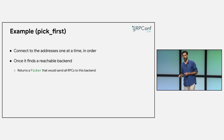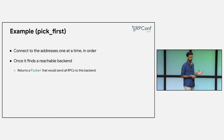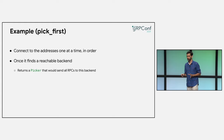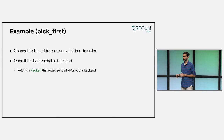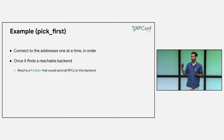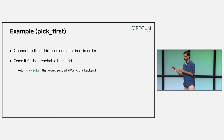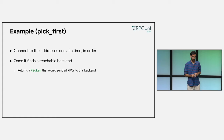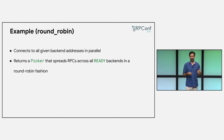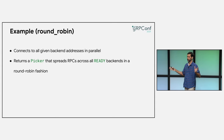Pick first is one of the simplest LB policies that all implementations of gRPC ship with. It gets a bunch of addresses from the name resolver, starts connecting to them in order, and the moment it finds one that is reachable, it uses that for all RPCs. Round robin is in stark contrast: when it receives addresses from the name resolver, it connects to all of them, and when it gets an RPC, it spreads those RPCs across ready backends in a round robin fashion.